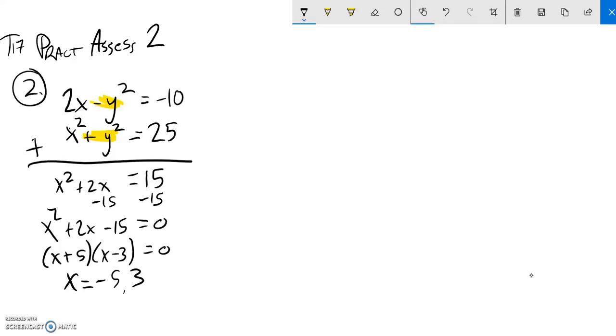Those are the two x values. I can plug them back in and figure out y, so I'll do them one case at a time. X equals negative 5. I could plug it into either equation. I'll plug it into this one, it just seems like an easier one to use.